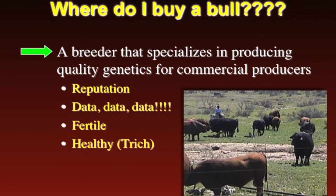Where should you buy a bull? From a breeder that specializes in producing quality genetics for commercial producers, or if you're a purebred producer, from a purebred breeder with high-quality genetics. The breeder needs to have a reputation — honesty and integrity — so you know you're getting what you desire: a bull that is fertile, of good genetics, and disease-free. A breeder with a good reputation will stand by their bulls; if there are any problems within the first few months to a year, they will make it good.